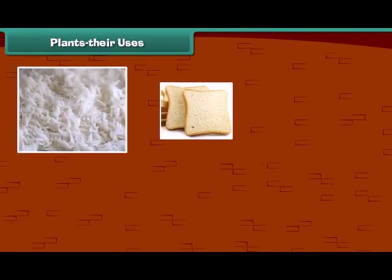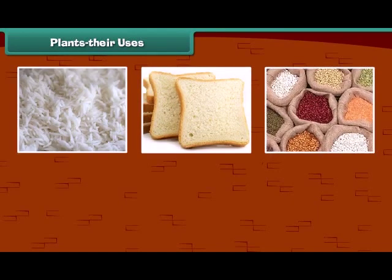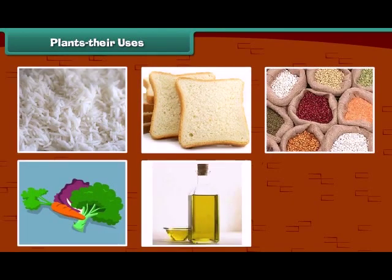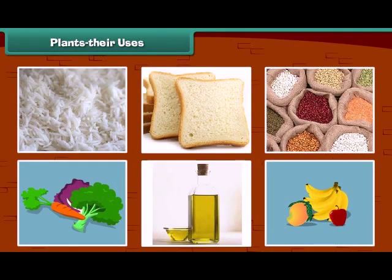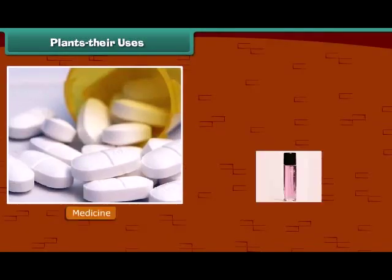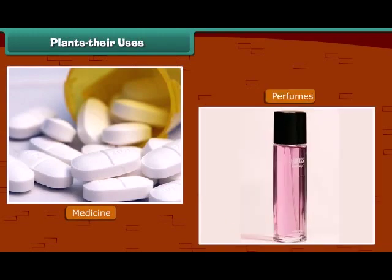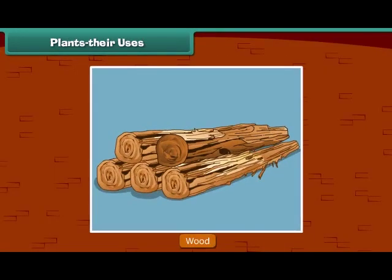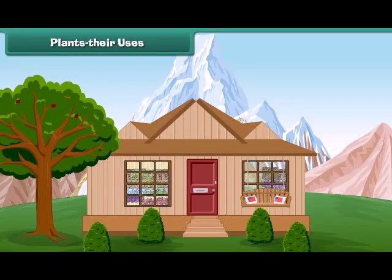We know that we get our food items from the plants. Besides food items, we also get many other things from plants. Many medicines and perfumes are made from plants. Plants also give us wood. In some places, houses are made up of wood.